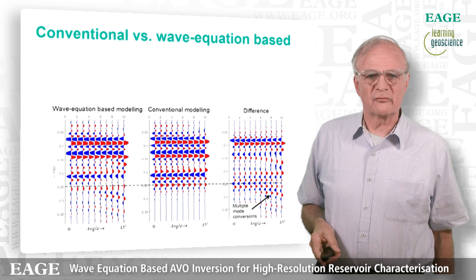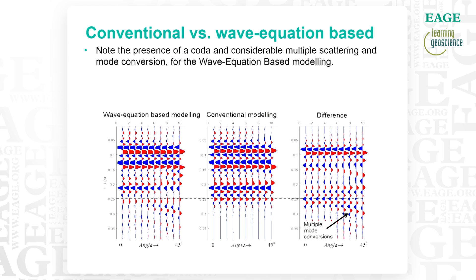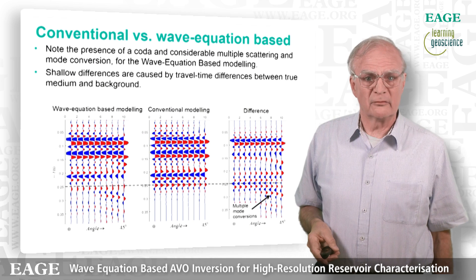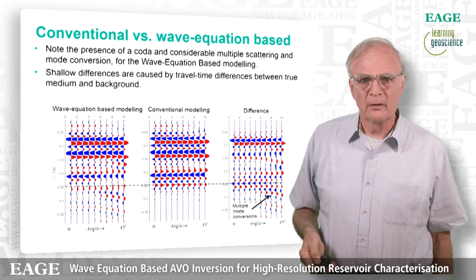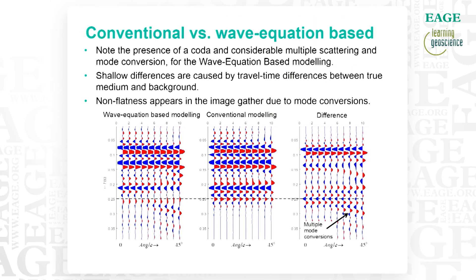To look at the things together: to the left you see the full wave equation-based model, in the middle the linear model, and you see the difference. A few things already indicated: the multiple mode conversions indicated by the arrow, and the presence of the coda in general. There are also shallow differences which are time shifts — the full wave equation-based modeling has propagation in the real domain, whereas the linearized works in the background domain, and there can be time shifts which show up as new events in the difference plot. There's a significant difference between these two ways of modeling, more different than people usually assume. You have to be careful: if you apply a radial filter to remove all this non-flatness, you may actually be removing useful data rather than noise.